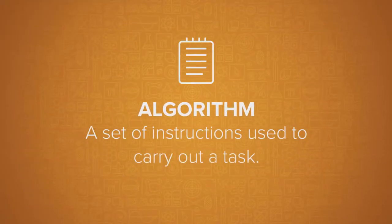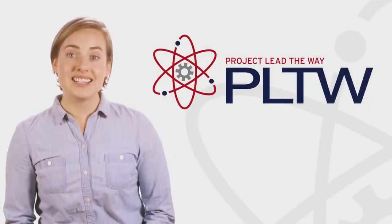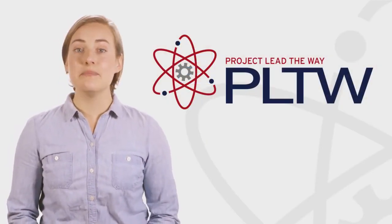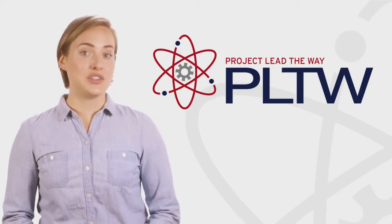An algorithm is a set of instructions used to carry out a task. Computer scientists write their algorithms using a simple natural language, like English, so it's easier for their clients to understand.